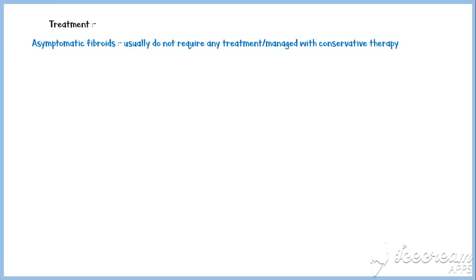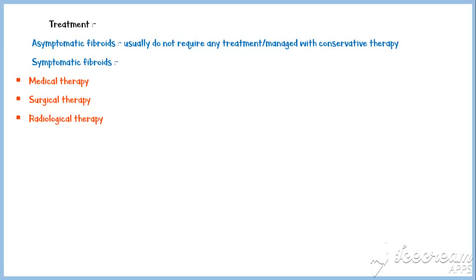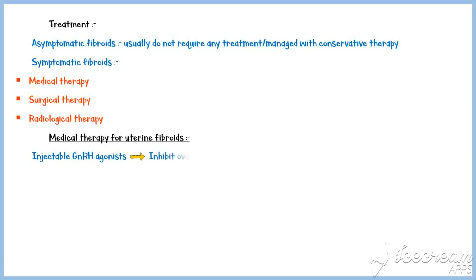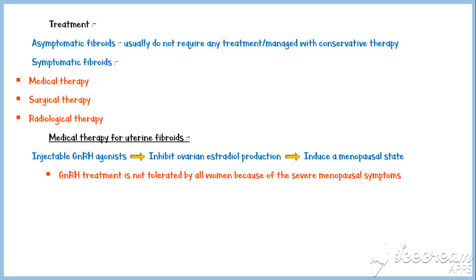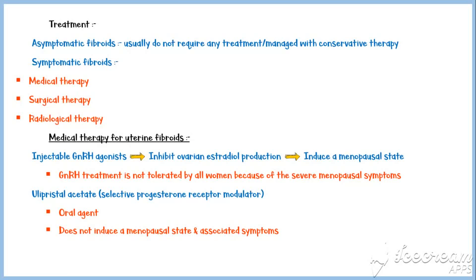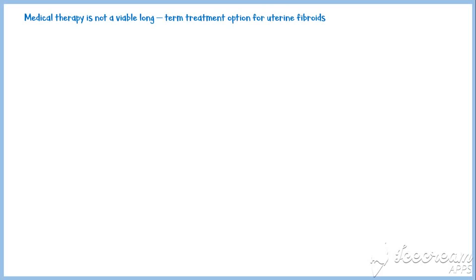Asymptomatic fibroids usually do not require treatment or are managed with conservative therapy. Symptomatic fibroids can be treated with medical, surgical, or radiological therapy, depending on the type and severity of fibroids, fertility desire of the patient, and many other factors. Commonly used medical treatment is injectable GnRH agonists, which inhibit ovarian estradiol production and induce a menopausal state. Ulipristal acetate is a newer oral drug with the same action but does not induce a menopausal state. Importantly, medical therapy is not a viable long-term treatment option, as fibroids regrow to their previous dimensions once treatment is stopped.